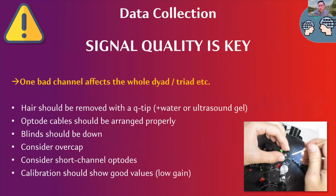The next thing that is really crucial for fNIRS hyperscanning is signal quality. This is also important for single-participant fNIRS, but for hyperscanning it is even more critical, because if we are measuring from the same brain areas in two participants and the signal is bad in one participant, then we automatically lose the same region and channel from the other participant, because we cannot then derive any synchrony or coherence measure.